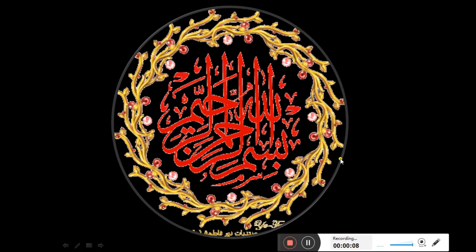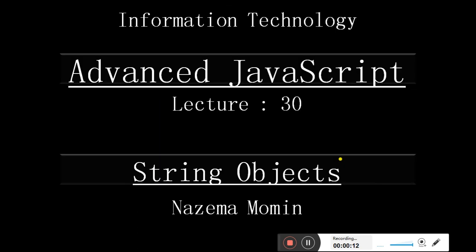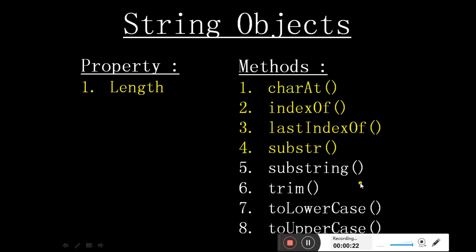Assalamu alaikum Rahmatullahi wabarakatuh. Hello students, hope you all are fine at home. Today we are going to start with the 30th lecture of Information Technology — Advanced JavaScript. Today's topic is String Objects. In the last lecture, we already studied one property and four methods of the string object: charAt method, indexOf method, lastIndexOf method, and substr method. Today we are going to start with a few more methods: search, trim, toLowerCase, and toUpperCase.